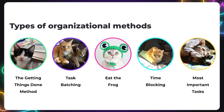The Getting Things Done method was established in 2001 by author David Allen. This is a pretty logical task management system based on five principles: capture, clarify, organize, reflect, and engage. You begin with smaller, more manageable tasks and ladder up to larger goals to gain momentum.